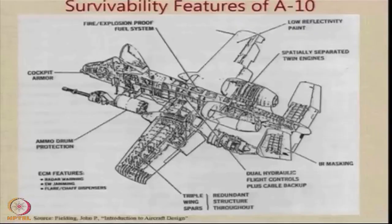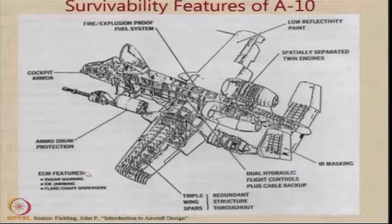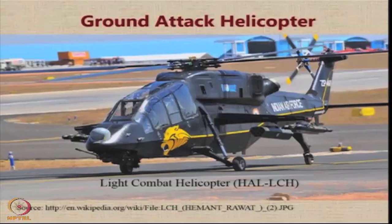The A-10 has many electronic countermeasure facilities. It has a radar warning system that alerts the pilot in advance about radar locking by other aircraft or ground systems. It has electronic warfare jamming systems and carries flare and chaff dispensers to misguide heat-seeking missiles if they are launched. HAL has also developed a ground attack helicopter, the LCH (Light Combat Helicopter), which fits well into this ground attack mission.